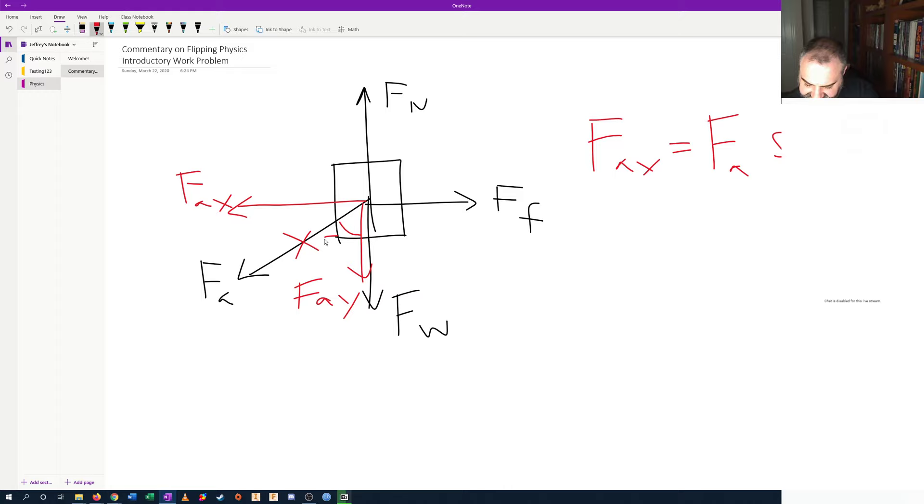This being the 59 degrees, this being the 59 degree angle that they discussed on the problem. F ay is, of course, f a cosine of 59 degrees.